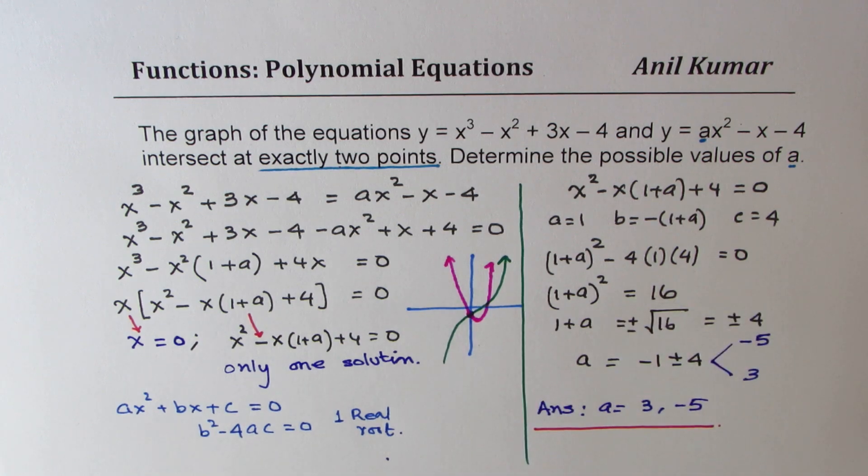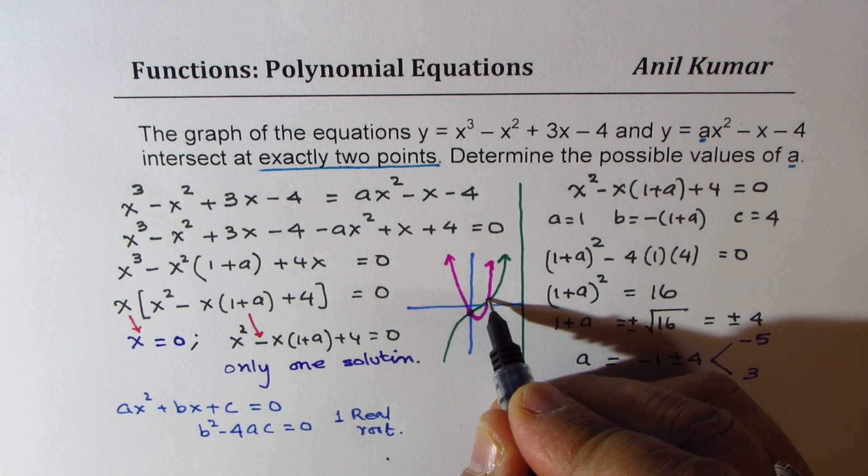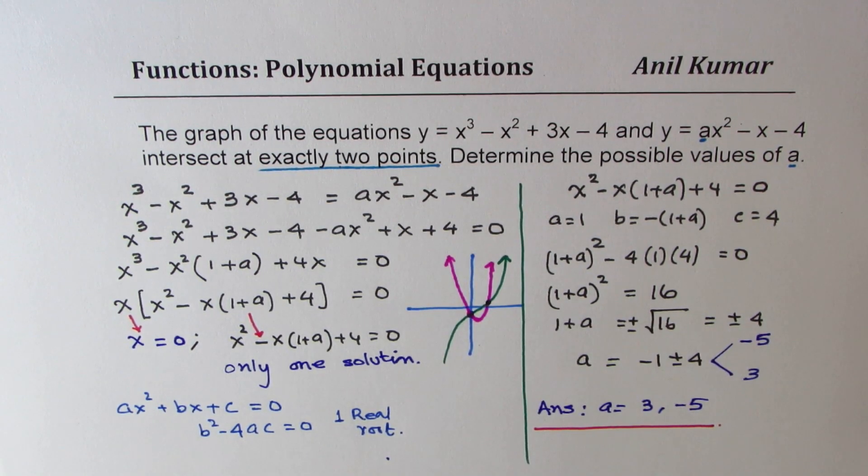So that is how we'll get two points of intersection, which are these two points depending on the value of a. So I hope that is absolutely clear. Feel free to write your comments and share your views. If you like and subscribe to my videos, that'd be great.